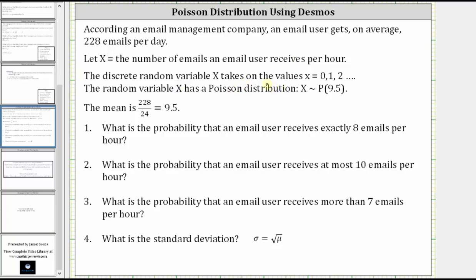However, the mean, often represented by mu or lambda, is not equal to 228 because this is the number of emails per day. We're concerned about the time interval of hours. So the mean is going to be 228 divided by the number of hours in one day, which is 24, which gives us 9.5 for the mean, again represented by mu or lambda.